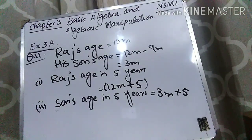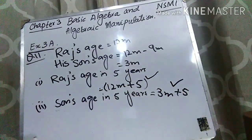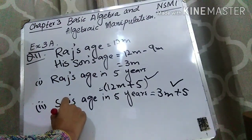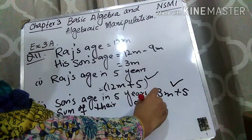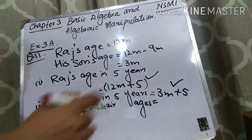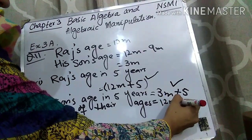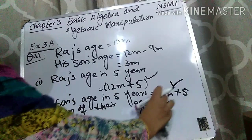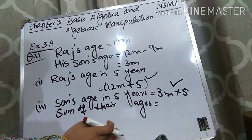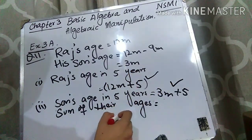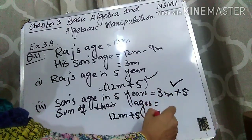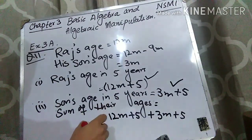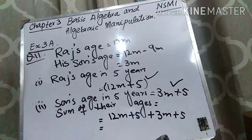They are saying find the sum of their ages in 5 years' time, so we have to add these two ages together. Sum of their ages equals (12m + 5) + (3m + 5). I'll work this out in the next step to make it clear.